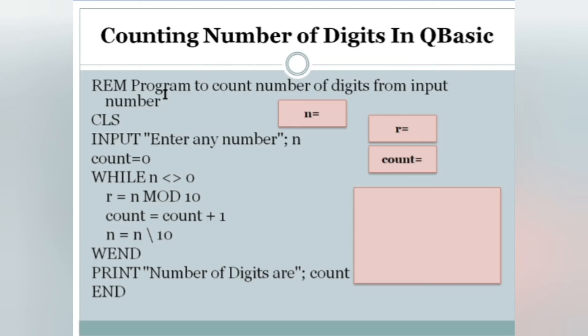We are here on the laptop screen. I will be showing you a dry run as well as practical output of how it works. The question is: write a program to count the number of digits from an input number. The user will enter any number like 1, 2, 3 or 1234567, and you have to count how many digits there are — for example, 123 means three digits, 1234 means four digits.